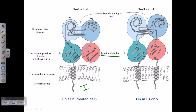Class 2 molecules, in contrast, have two transmembrane segments instead of one. They also have two different types of chains — alpha and beta — with alpha 1, alpha 2 and beta 1, beta 2 domains. Both chains are attached to each other, and their extensions are embedded into the cell membrane, holding these structures together.